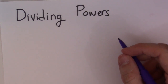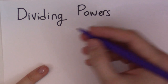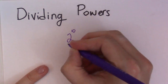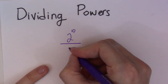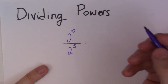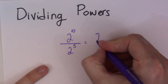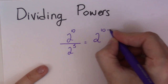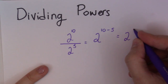Alright, dividing powers. Let me give you an example. A power is, you know, something to a number. So let's say I had 2 to the 10, and I was dividing it by something that has the same base, 2 to the 5. All I would do in a situation like this is subtract the exponents. So I would rewrite it as 1 base, and I would go 10 subtract 5, which is actually 2 to the 5.